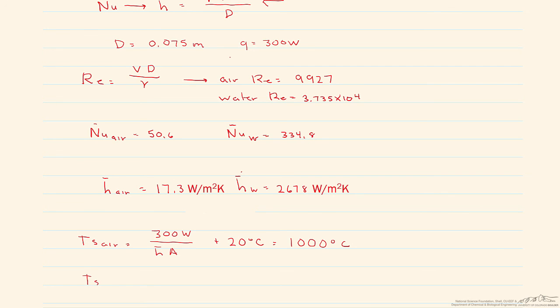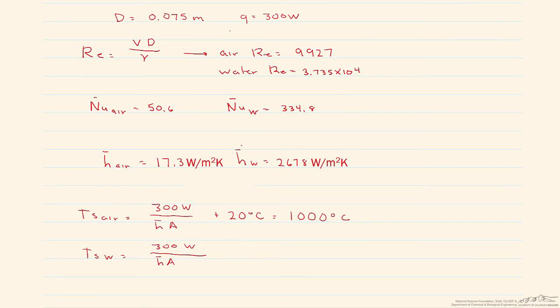If we find it for the water, and we do the exact same thing, remember that our h bar for our water is considerably higher, and we add 20 degrees C to that, you'll find that that's equal to 47.3 degrees C. This shows that the choice of medium is extremely important when you're looking at dissipating heat.